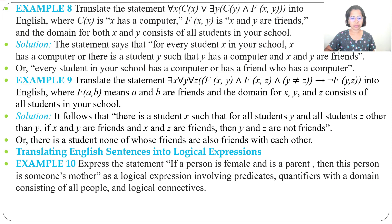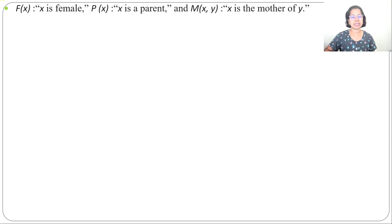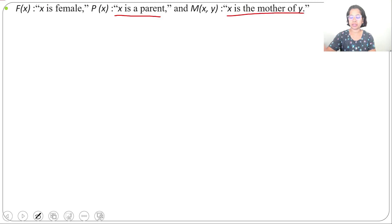First, we need to rewrite it. We can rewrite it as: for every person X, if person X is female and person X is a parent, then there exists a person Y such that X is the mother of Y. Let F(X) be 'X is a female', P(X) be 'X is a parent', and M(X, Y) be 'X is the mother of Y'.